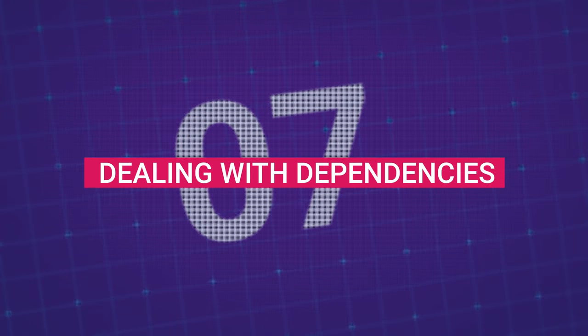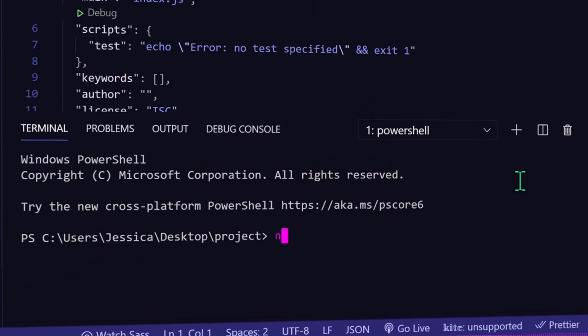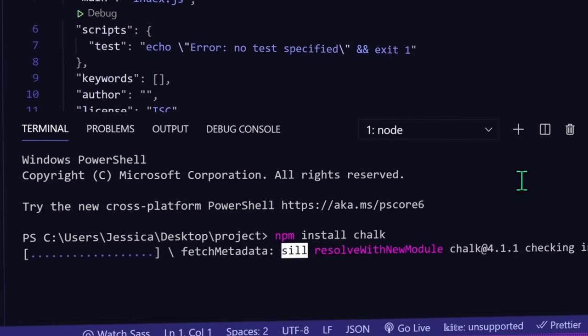Once you've created your package.json file, you can now start installing packages. But what does installing a package actually do on your computer? Let's say you have a brand new project and you need the chalk package. You type in npm install chalk, and npm starts installing it.